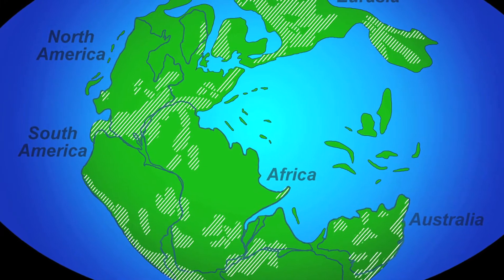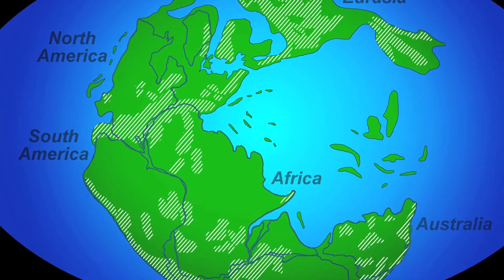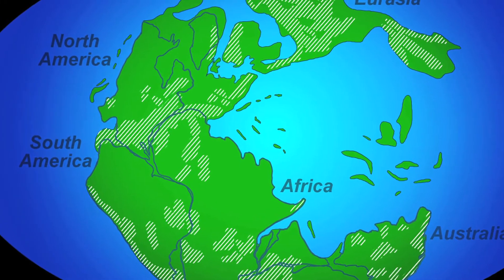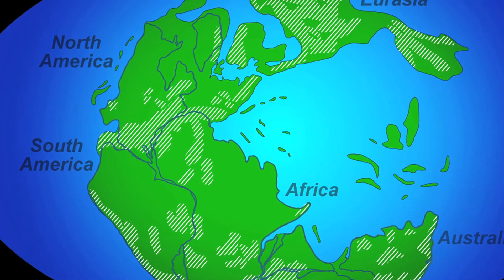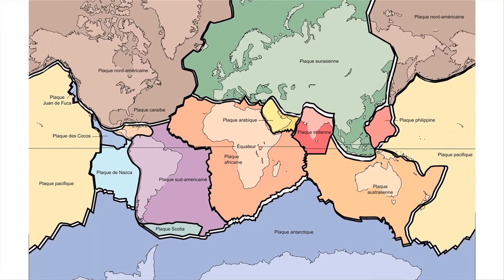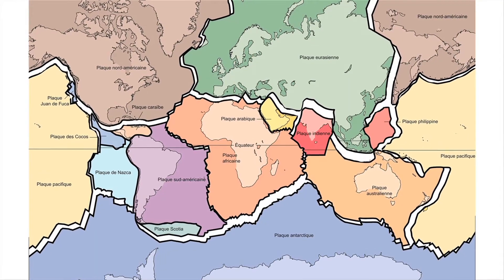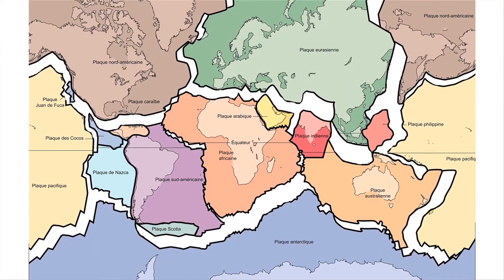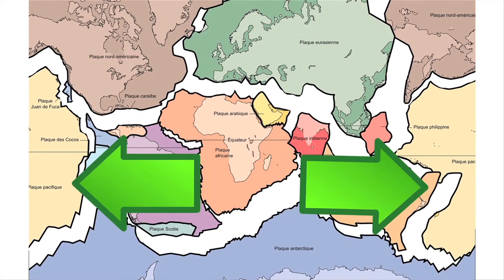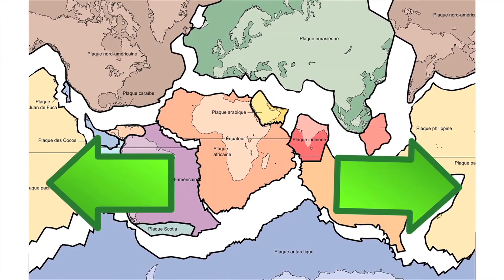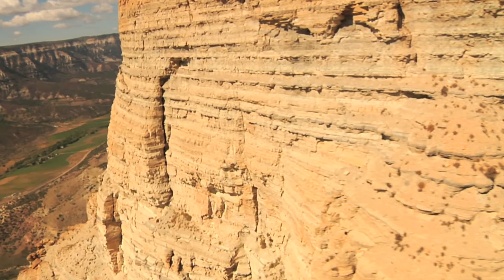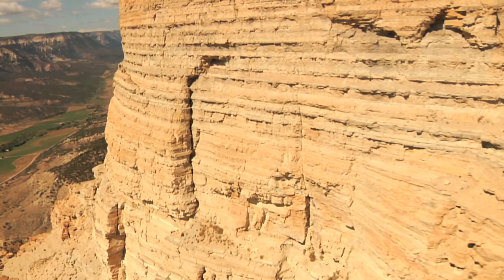Plate tectonic theory is based on the idea that the Earth only had one landmass, which we called Pangaea. Over the course of millions of years, Pangaea drifted apart to form the continents that we see and know today. The movement of these continents has resulted in many of the geological formations on Earth today.